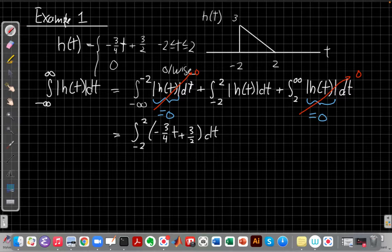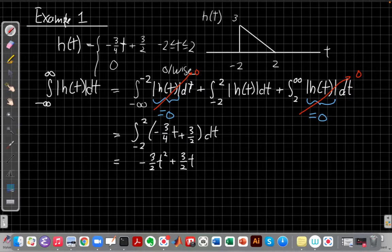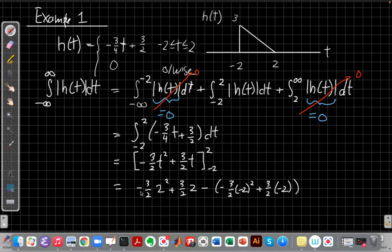So next step, I just dust off my calculus skills and do this integral. So the integral of minus three quarters T plus three halves T, I'll integrate each term and get minus three halves T squared plus three halves T. Now, because this is a definite integral, evaluate it at the upper and lower limit. So when I do that, I have minus three halves two squared plus three halves two, which is what I get when I plug in the two, and then I subtract from it the expression evaluated at the lower limit. So minus three halves times minus two squared plus three halves times minus two.